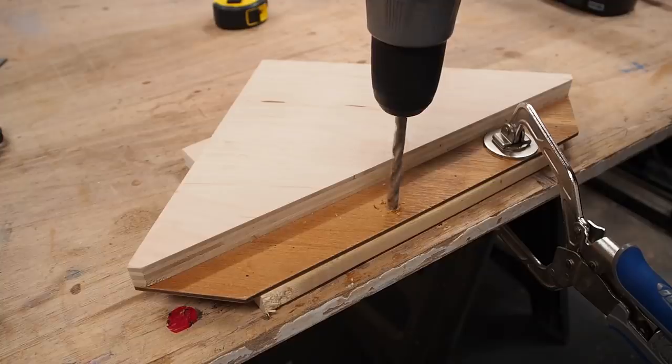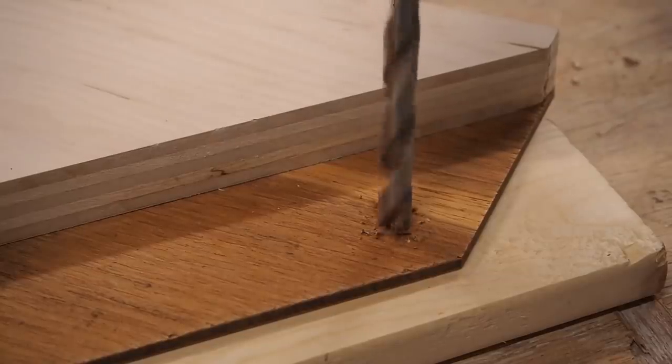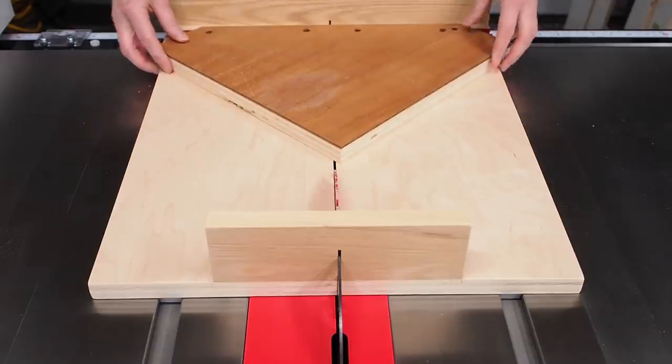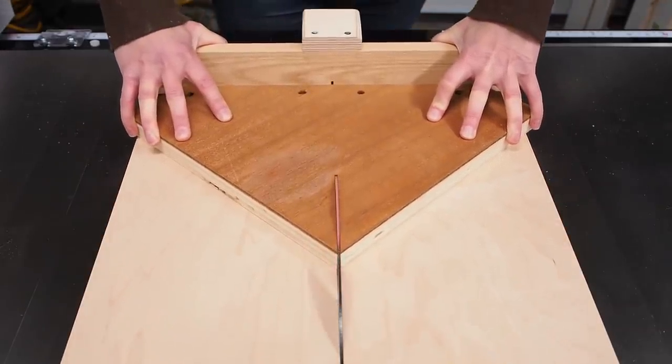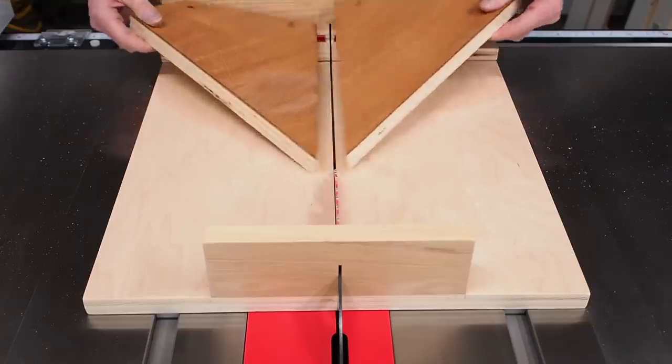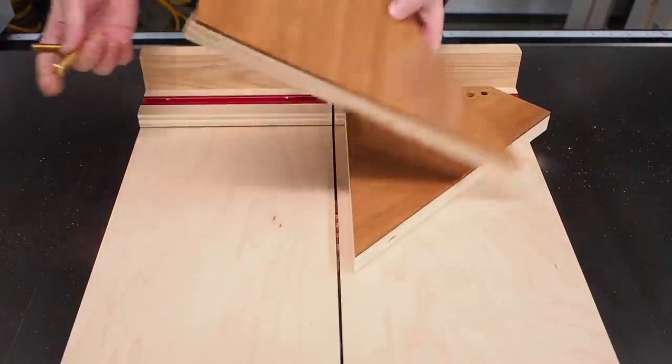I then pre-drilled four holes for the t-track bolts and carried it over to the sled. With it pushed back square against the fence and the point of the triangle dead center on the kerf line I made the cut. Next all that's left is to lock it into place using the t-track.